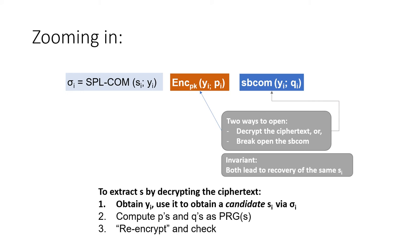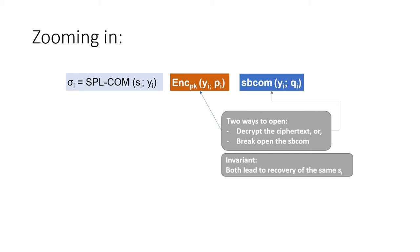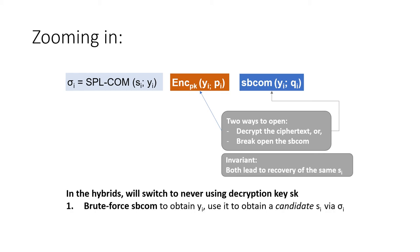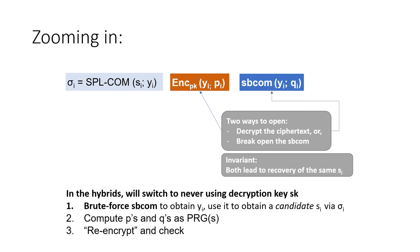These checks can be used to ensure that in a hybrid game, one can switch to answering the adversary's oracle queries without ever relying on the decryption key. Instead, in the hybrid experiment, the decryption oracle is implemented by brute-force breaking the statistically binding commitment to obtain a candidate opening yi, which gives a candidate bit si of the seed. Once the seed is obtained, one computes the P's and Q's and performs a series of checks. As long as the checks pass, it is computationally hard for the adversary to submit a decryption query where the orange box and blue box lead to different decryption results.